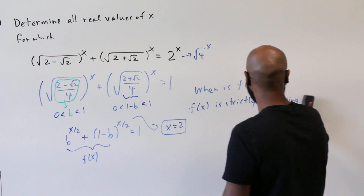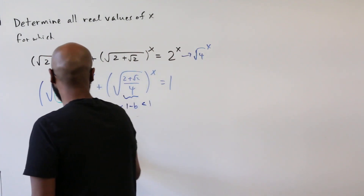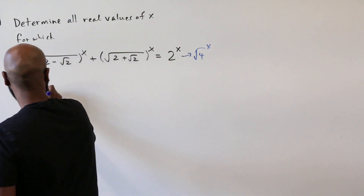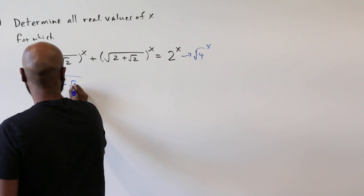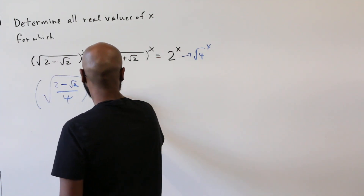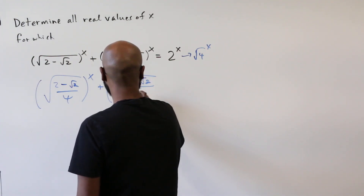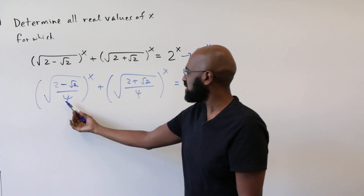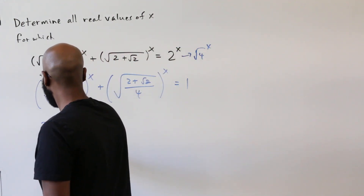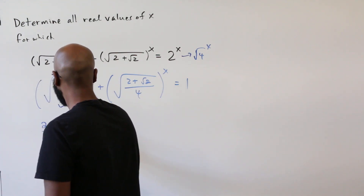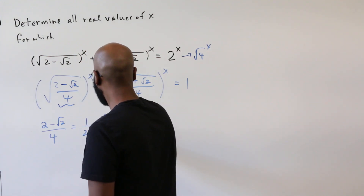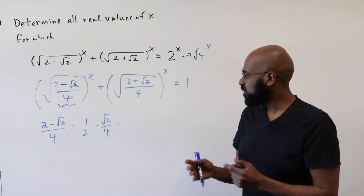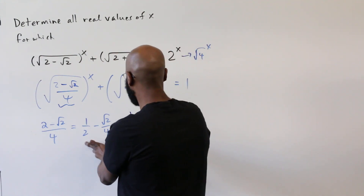Now we'll jump into our second solution, which uses a completely different approach but starts off with the same observation. We rewrite the equation as: the square root of (2 minus root 2) over 4 to the x plus the square root of (2 plus root 2) over 4 to the x equals 1. In this solution, we're going to analyze the argument again. The value b equals (2 minus root 2) over 4 can be rewritten as one half minus root 2 over 4. Now root 2 over 4 looks close to a trigonometric number, so maybe trigonometry might help us.